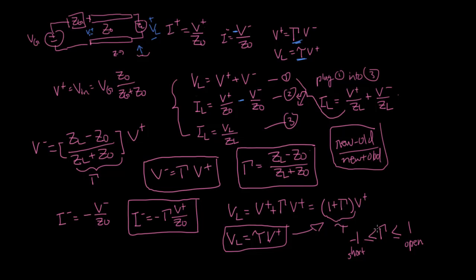In the case of gamma equals one, the load voltage is one plus one times the incoming voltage — so it's actually 2V plus, which might seem counterintuitive. However, when you look at the current, the current is the difference between the two voltages. In the open circuit situation, no current flows. So even though the voltage is higher, the current is lower — you still have conservation of energy.